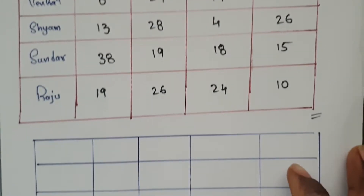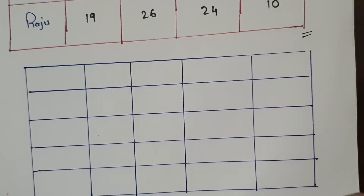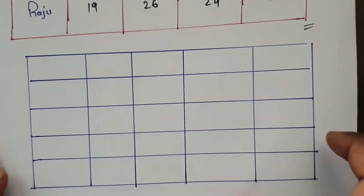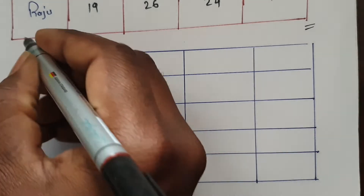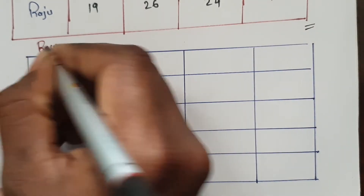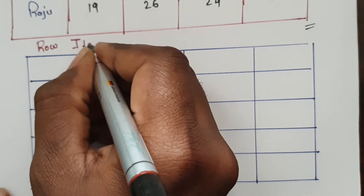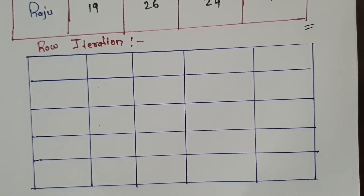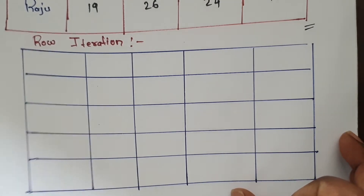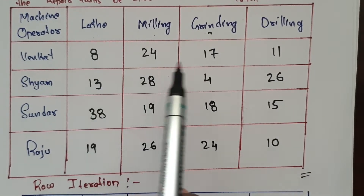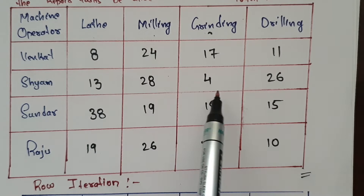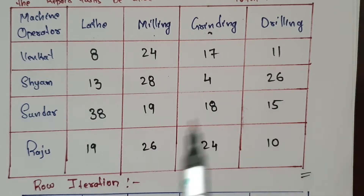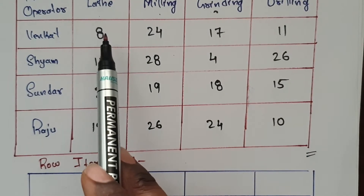Now you have to create a new table. First, what you have to do is row iteration. In row iteration, you have to select the least value in each row. As you can see: 8, 24, 17, 11 — 8 is the least. The table has operators Venkat, Shyam, Sundar, Raju and machines lathe, milling, grinding, drilling.